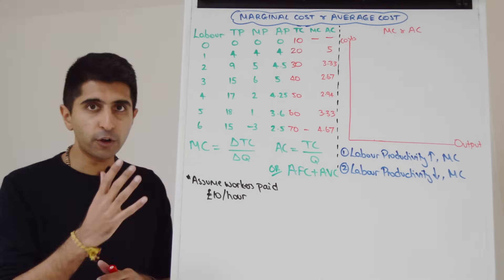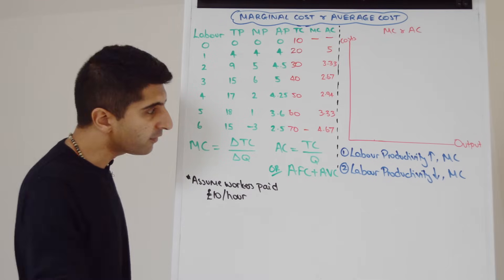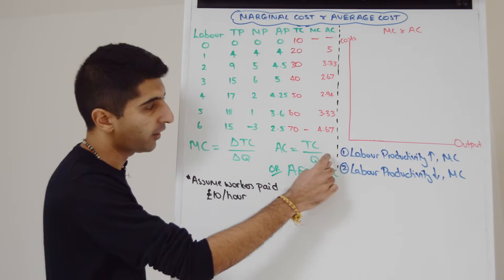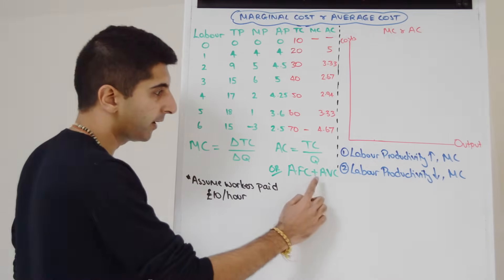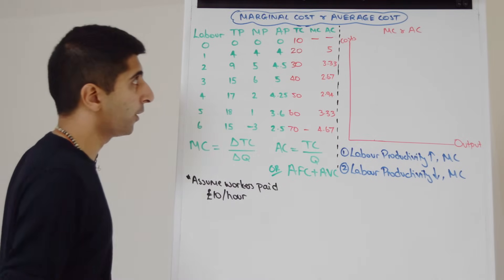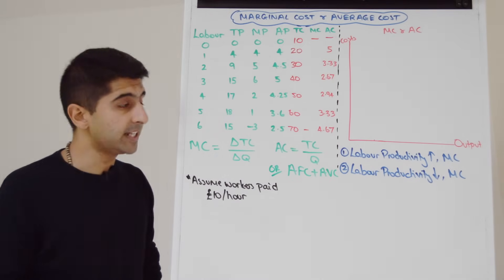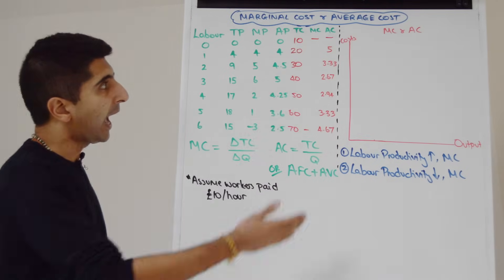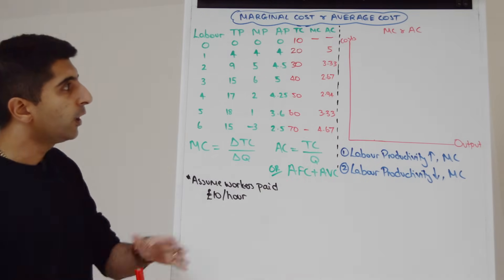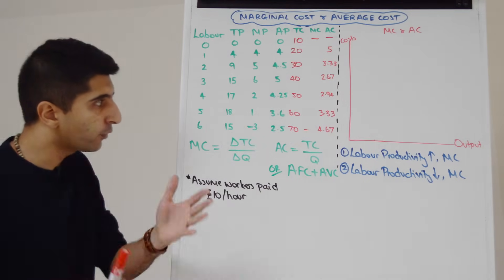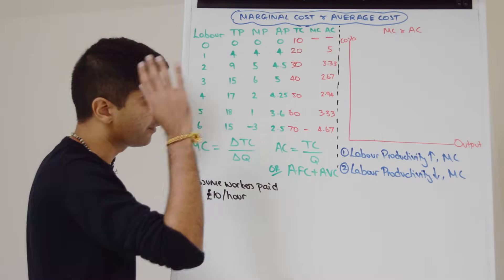What about average cost and marginal cost? We need the equations first. The equation for average cost is total cost divided by quantity, or we could use average fixed cost plus average variable cost. In this case I'm going to use the first equation because that's the data we have. And if we do total cost divided by Q for all these figures, we get the numbers on the right hand side — you can work them out on your own.